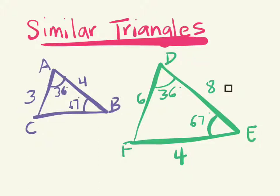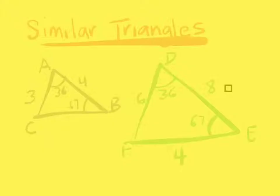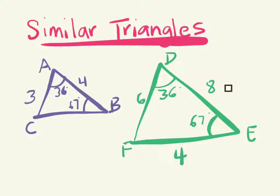You can see that the lengths are different, but what is the same in these two triangles? The angles are the same. The corresponding angles are exactly the same. Look at angle A — which angle corresponds with angle A? Angle D is corresponding to angle A, and they're the same angle.